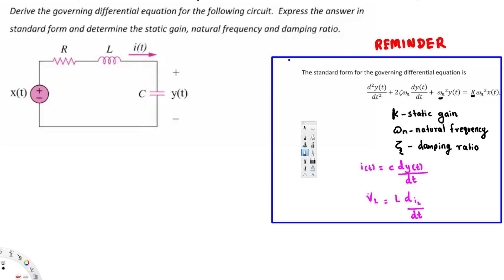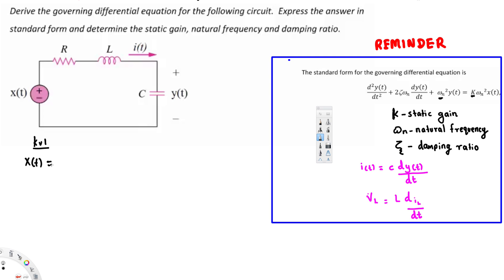To derive the differential equation, we are going to use Kirchhoff's voltage law. In Kirchhoff's voltage law, the sum of all voltages in a loop should be equal to zero — or equivalently, voltage in equals voltage out. In our case, voltage in is X(t), so X(t) should equal the sum of the voltage across the resistor, the inductor, and the capacitor.